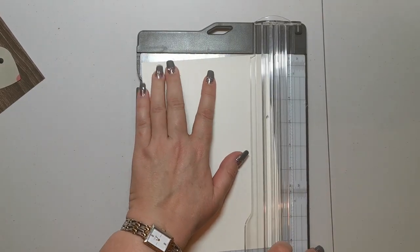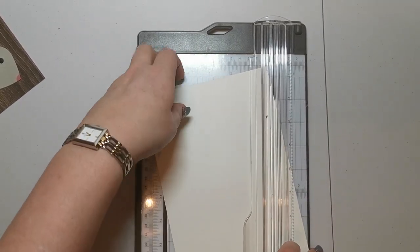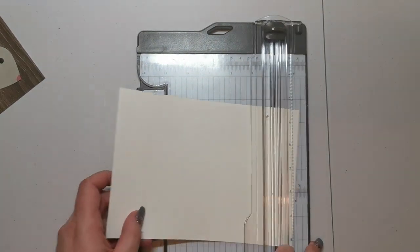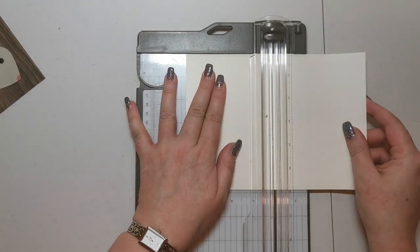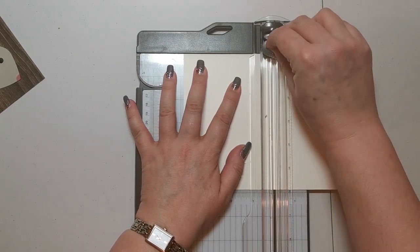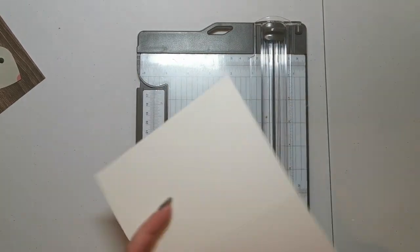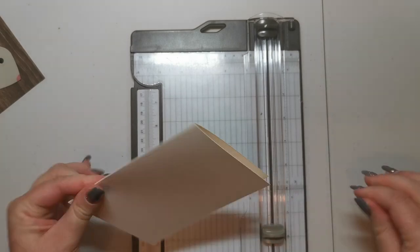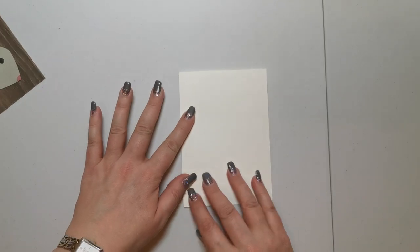Just put that to one side, and then I'm going to score at four and an eighths. So there is my standard card base, and that is in very vanilla, but you could have any color you like. I'll just put that to one side, so there's my card base in very vanilla.